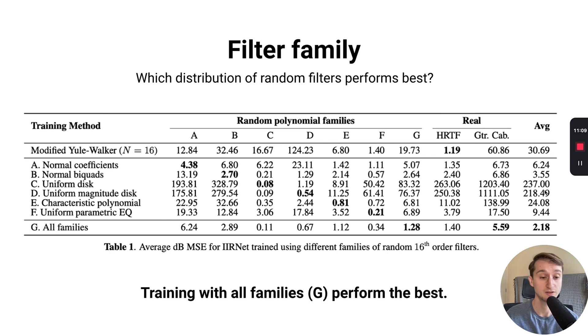In the case of the filter family experiments, we trained one model on each of the different filter families, as well as one model trained on all of the different filter families. Then we evaluated each of those models on the different subsets of those filter families. As evidenced by the diagonal here in this plot, you can see that training on the filter family produces the best or lowest error on that filter family during inference time. But interestingly, the major takeaway that we found was that actually training with all of the filter families at the same time produced the best error on average across all of the different datasets that we looked at, across all the polynomial families, as well as the HRTF and guitar cabinets. Interestingly, the Yule-Walker approach performed very well in the case of the HRTFs outperforming all the other approaches, but it performed far worse on many of the polynomial families, indicating that its generalization to very extreme or difficult filters may not be as good as the approach of IIRNet.